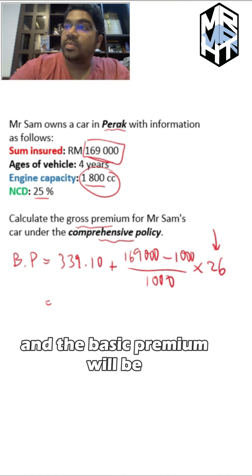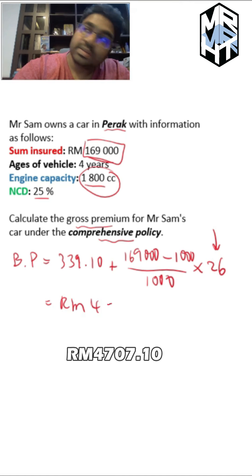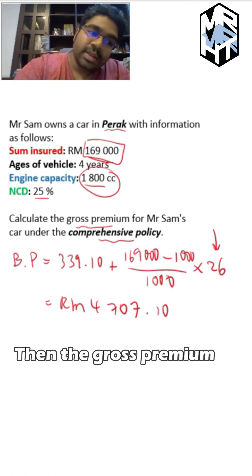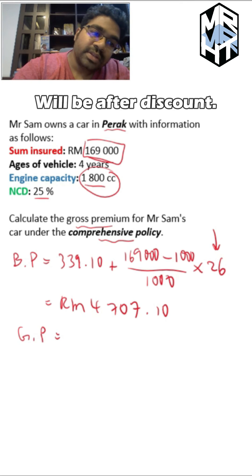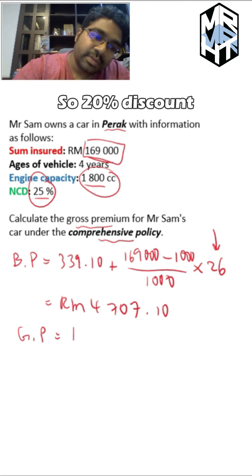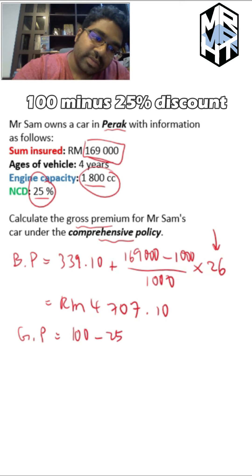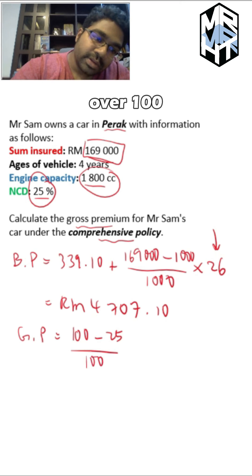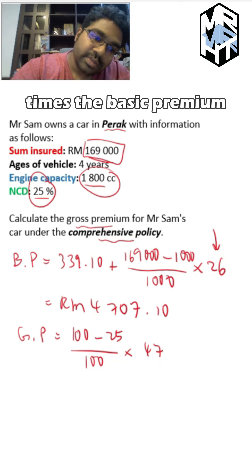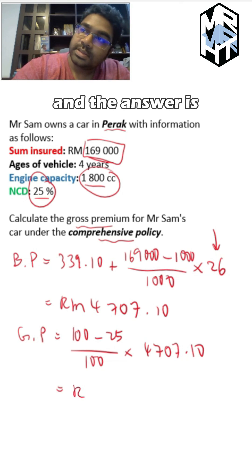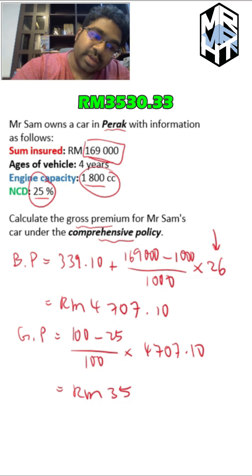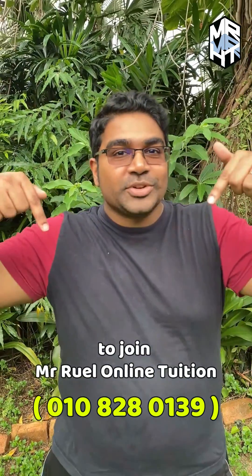The basic premium will be RM4,707.10. Then the gross premium is calculated after the NCD discount: 25% discount, so (100 minus 25) divided by 100, times the basic premium. The answer is RM3,530.33.